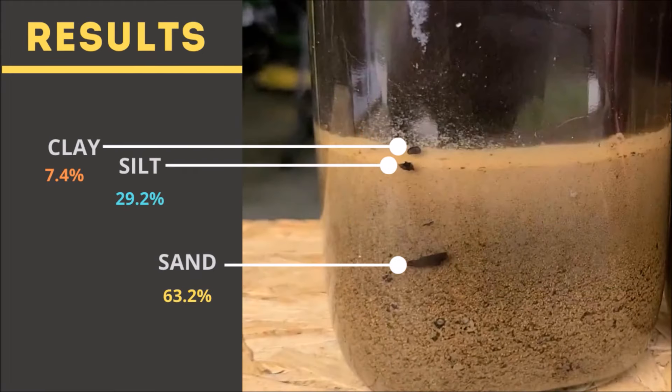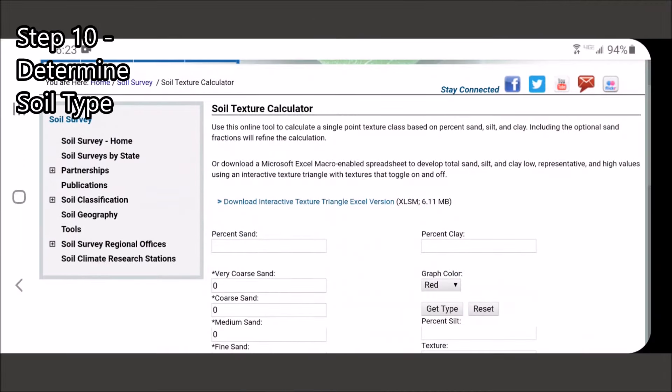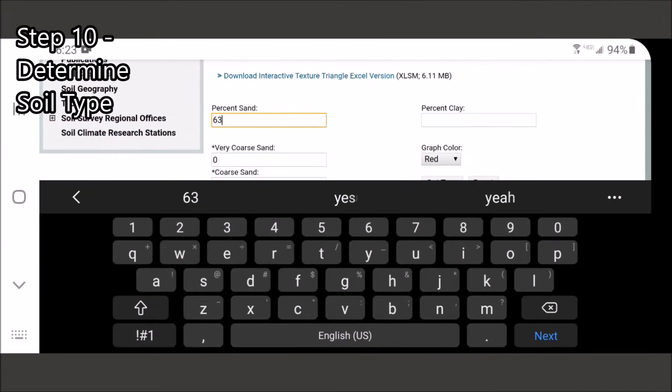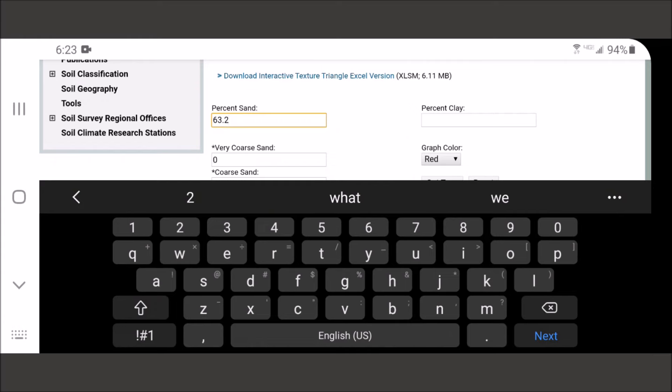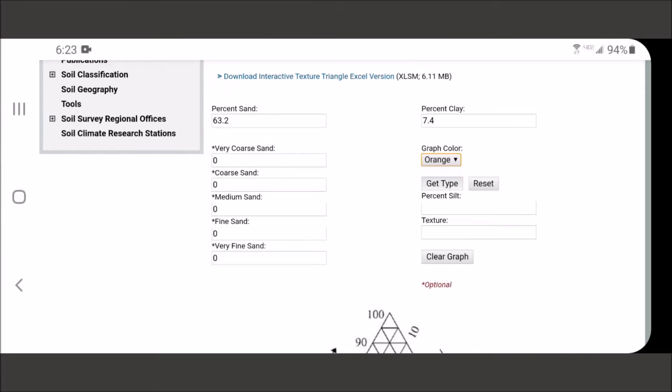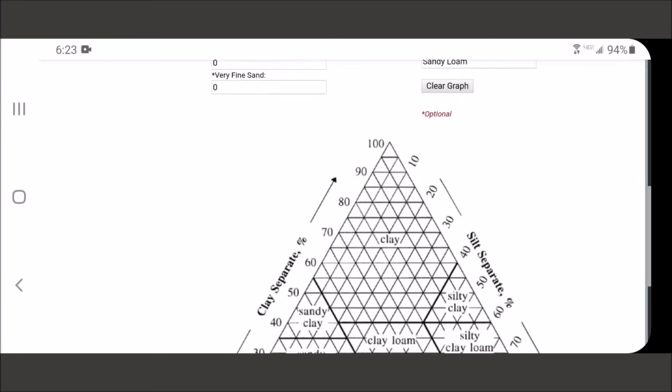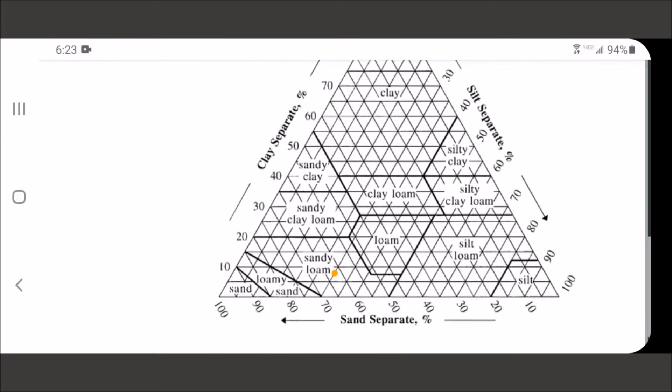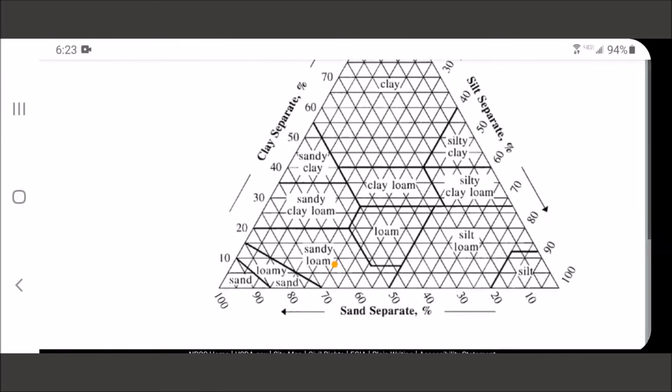Now we've got our percentages. What do we do with them? We can go to the USDA's soil pyramid website, which I'll have a link to. You put in the percentage of sand and clay, and it will show exactly where you fall. This sample is sandy loam, which is better than I thought—I expected clay soil because it didn't drain well, but turns out I just have a compacted sandy loam.